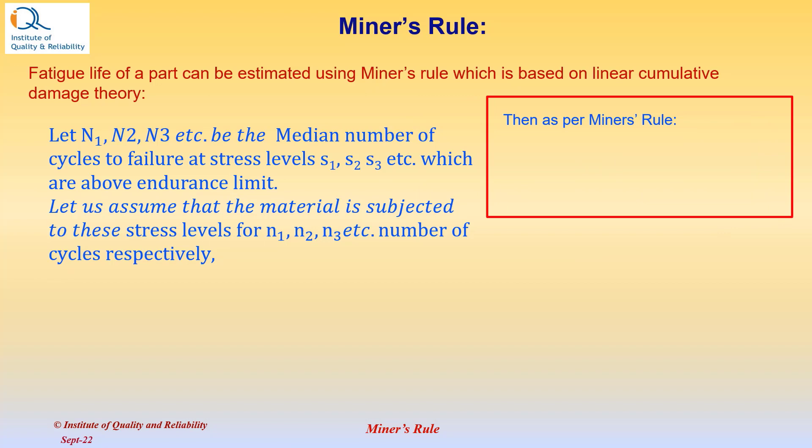Then as per Miner's rule, n1/N1 + n2/N2 + n3/N3, etc., up to nk/Nk equals 1, that is unity.